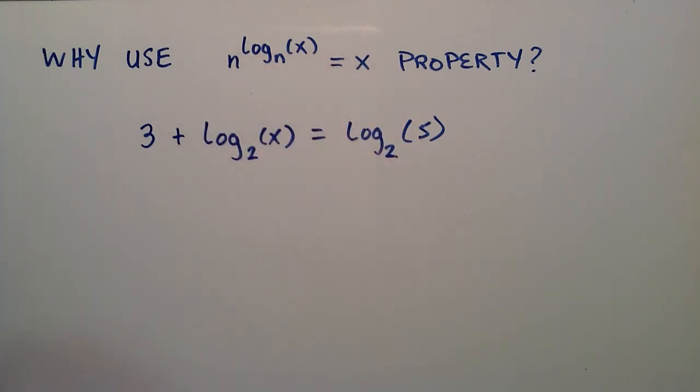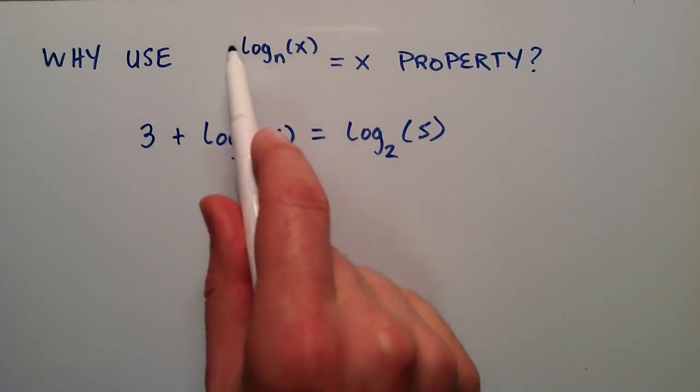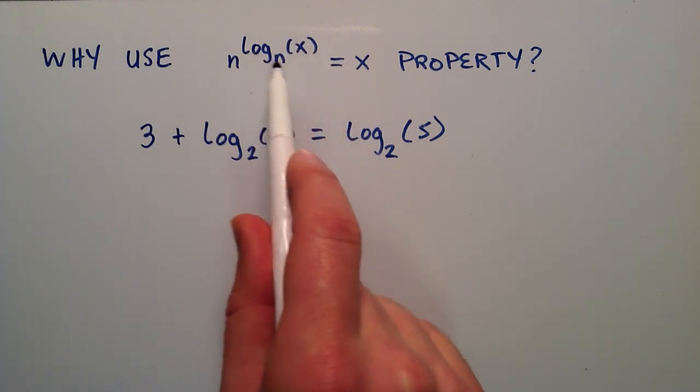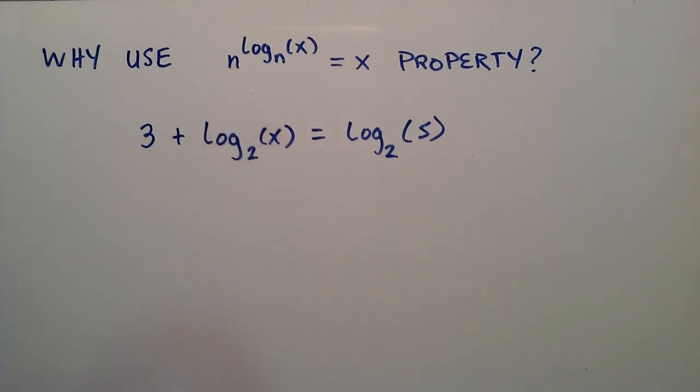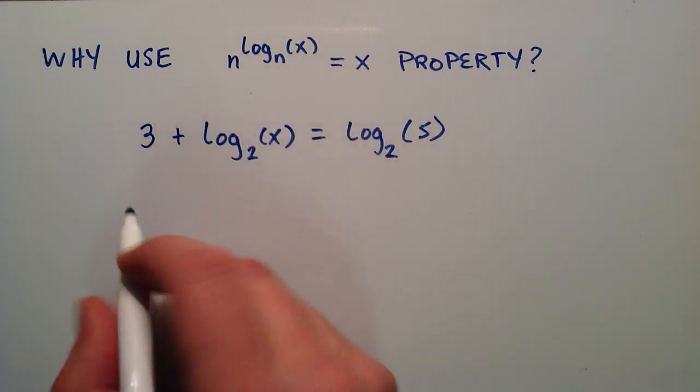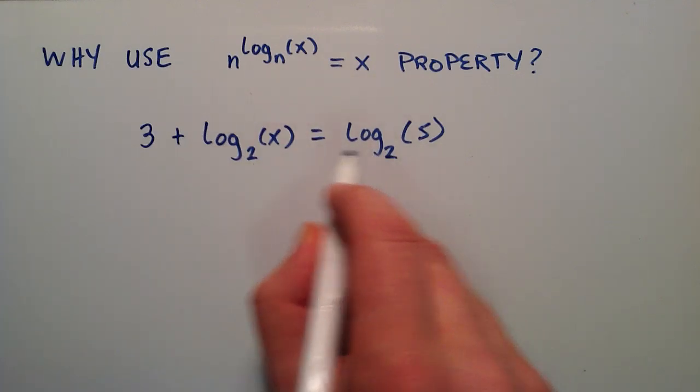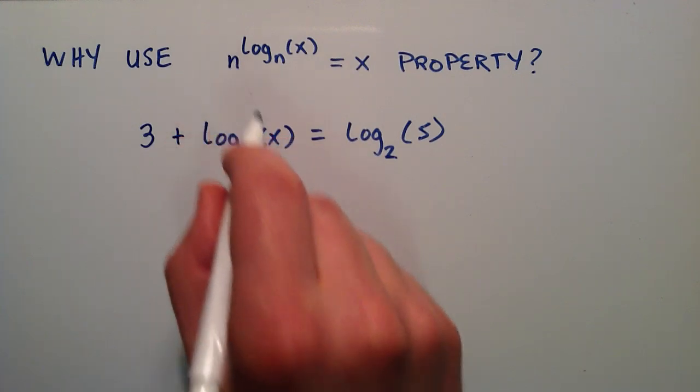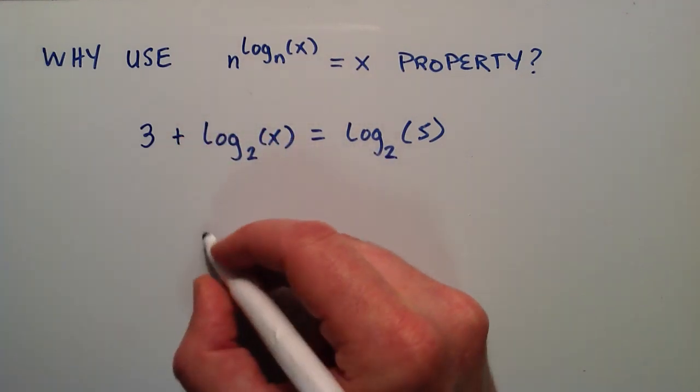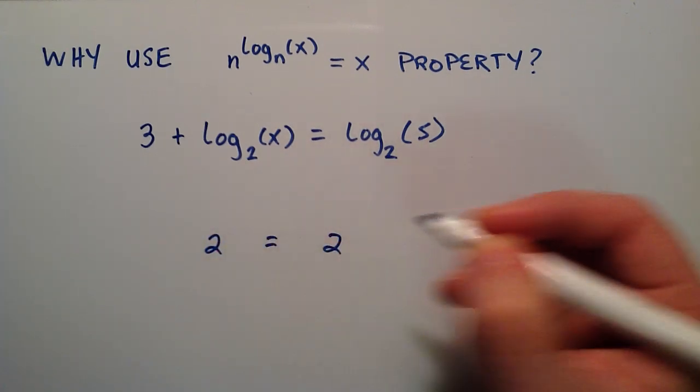So the first thing to realize is we want to have some base number raised to some power that's a logarithm that has the same base in the logarithm as the number base that we're dealing with. So we're going to take some number, and we're actually going to choose 2 for our number because we're going to have 2 be this base right here, and we've already got 2 as our base of our logarithms. So if I was to write the statement 2 equals 2, that would be a true statement.